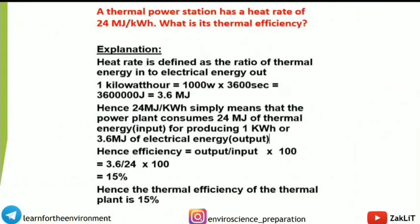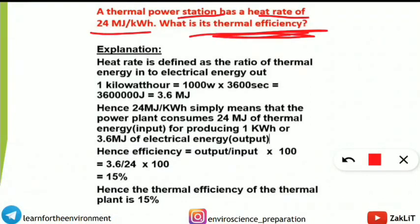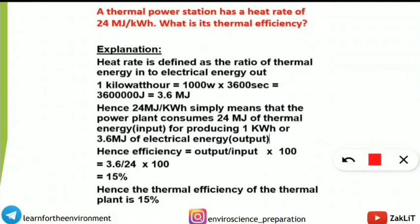Next is the fifth concept — another simple numerical. Question: A thermal power station has a heat rate of 24 MJ per kilowatt-hour. What is its thermal efficiency? Heat rate is defined as the ratio of thermal energy input to electrical energy output. First, know that 1 kWh = 1000 W × 3600 s = 3.6 MJ. So the power plant consumes 24 MJ of thermal energy (input) to produce 1 kWh = 3.6 MJ of electrical energy (output).